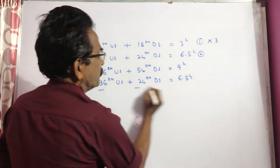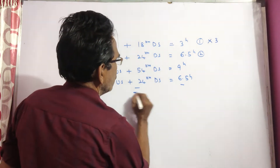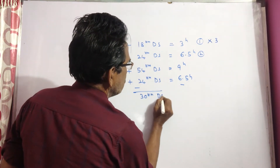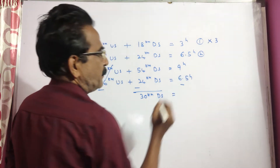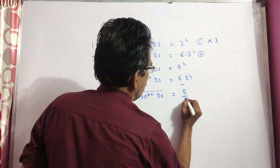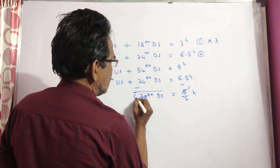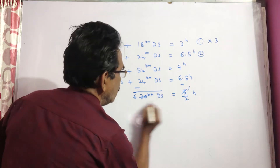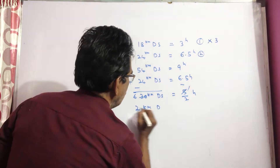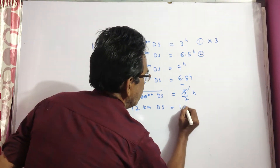Now on subtracting, 30 kilometers downstream takes 9 minus 6.5, which is 2.5 hours. 2.5 hours means 5 by 2 hours. So 12 kilometers downstream is traveled in 1 hour.